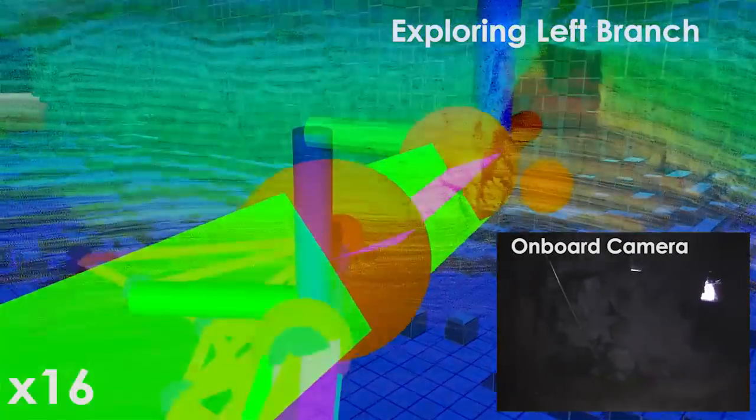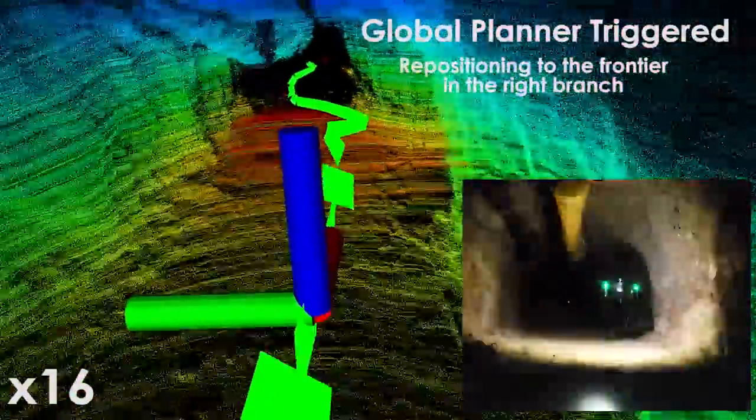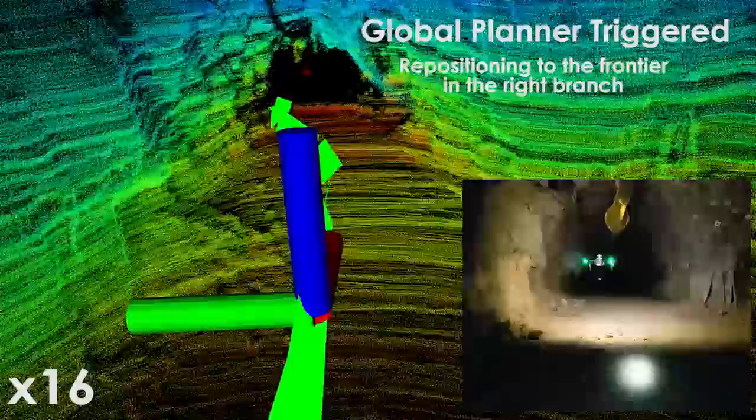Once the robot reached the allowed boundary of the exploration space, the global planner was then triggered and repositioned the robot to the exploration frontier of the right branch before re-engaging the local planning layer.